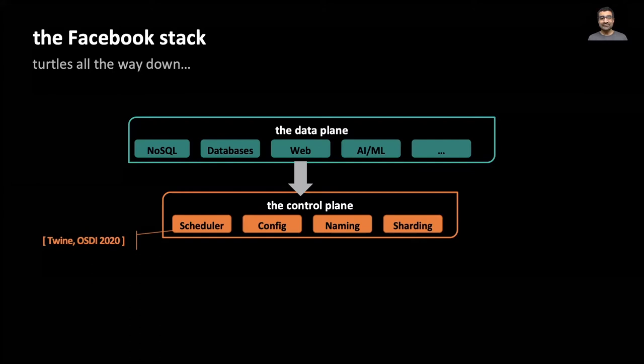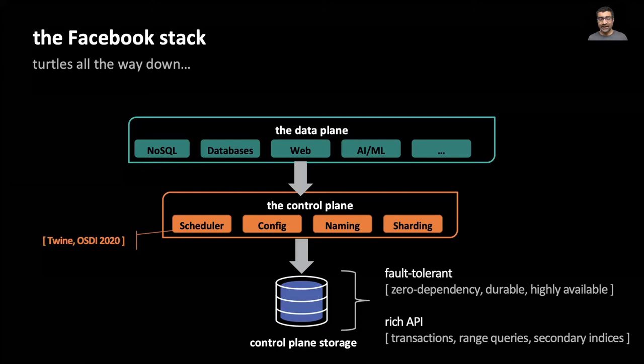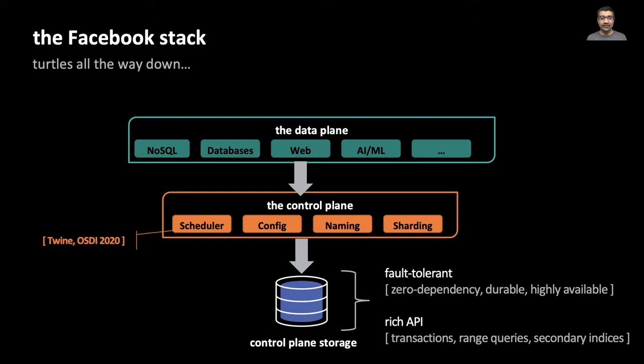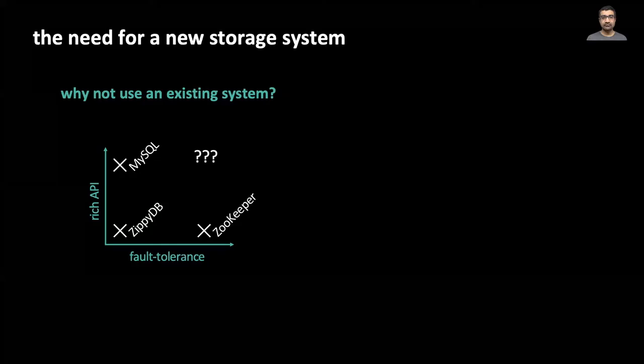An example control plane service is Twine which will be presented at this conference. Control plane services are typically stateful and the state has to reside in some storage system at the bottom of the stack. There are two requirements for this storage system. It has to be exceptionally fault tolerant since any outage or data loss can affect millions of users, and as part of this requirement it cannot depend on any other service. Second, our control plane services typically need a rich storage API with support for transactions, secondary indices and range queries.